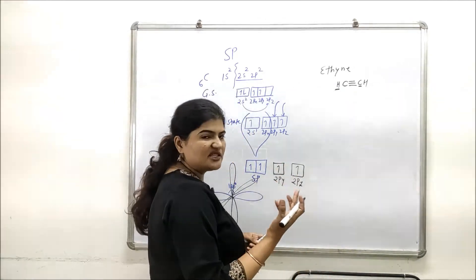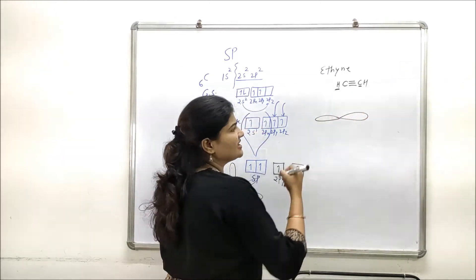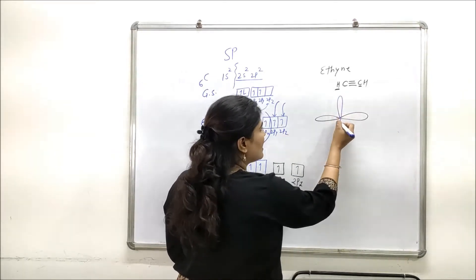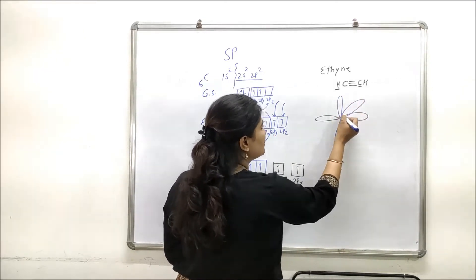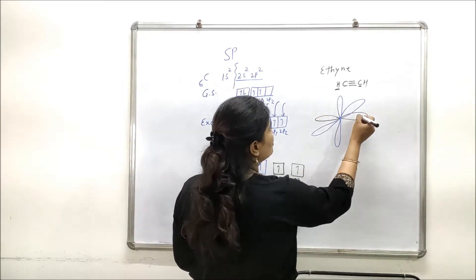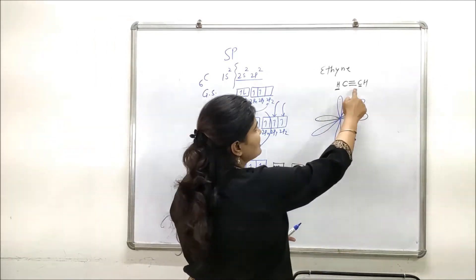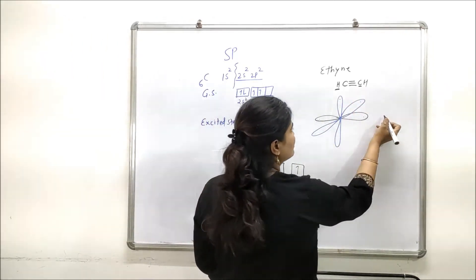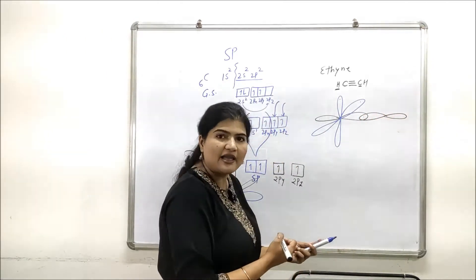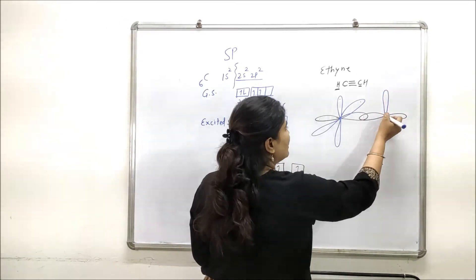In sp hybridized state, a carbon has these two sp hybridized orbitals, and there are two 2py and two 2pz orbitals present which are unhybridized and contain unpaired electrons. Similarly, this carbon also is in sp hybridized state, so I will draw this carbon with sp hybrid orbitals and the two 2py and two 2pz orbitals which are unhybridized and contain unpaired electrons.